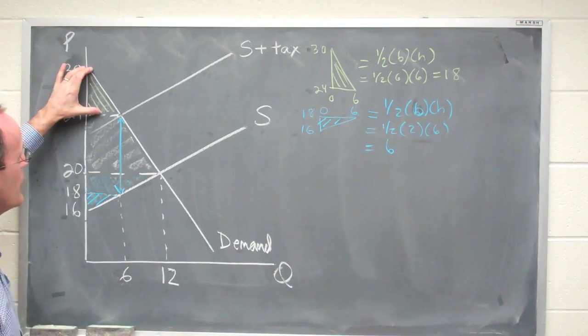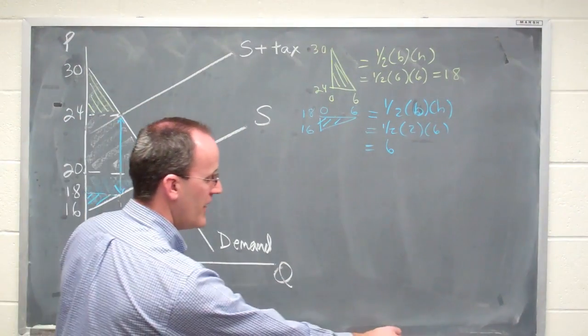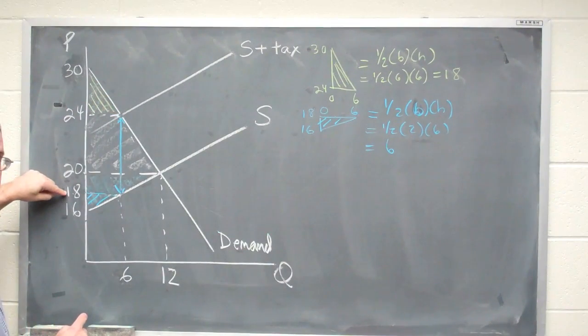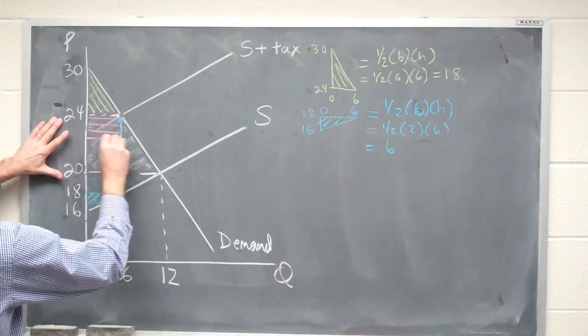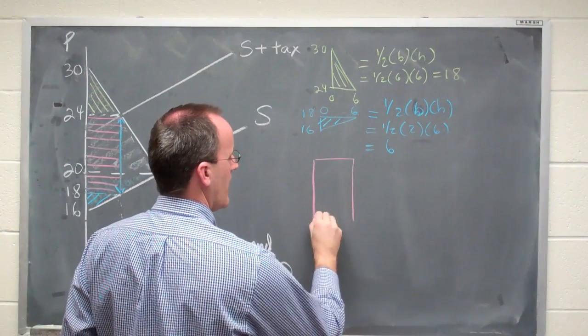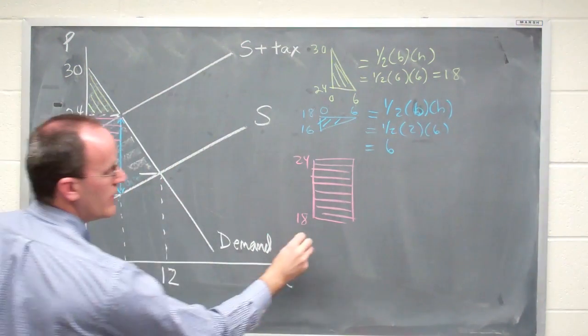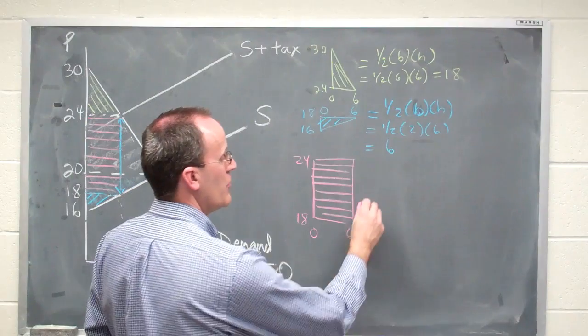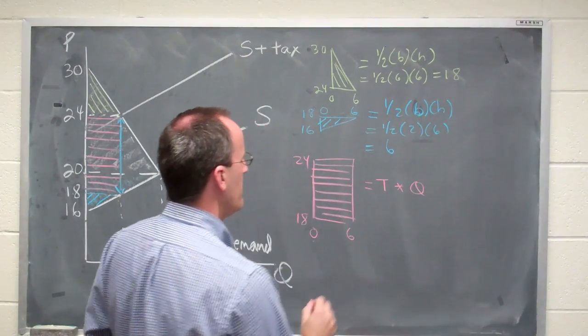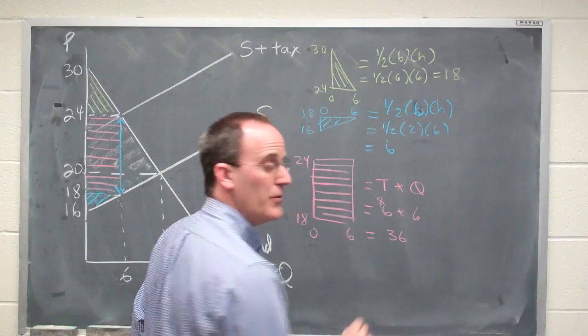Well, why is the consumer surplus so much smaller than it was before and the producer surplus so much smaller than before? The answer is that the government is getting a large chunk of this in the form of revenue. We can see this here in the graph because if this is the amount of the tax, then if the item is sold for 24, the producer nets 18, sending $6 to the government. What that means is this entire area between the producer and the consumer surplus will be the government's revenue. Let's pull that out over here. That's from 18 to 24 and from zero to six. But that's just a rectangle. So if we want to know the total revenue of the government in this case, it's just going to be the tax times the number sold. That's going to be in this case six times six. The total revenue here is 36.